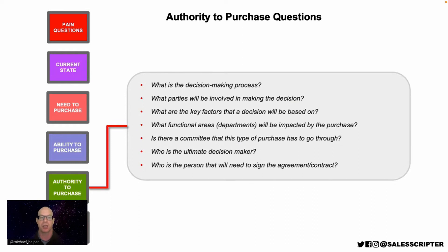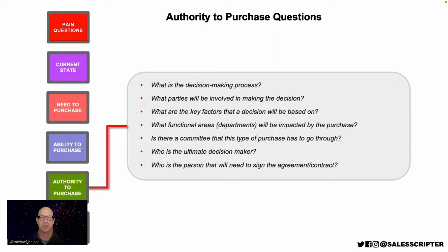One way to get the ultimate decision maker involved without offending the prospect you're working with is to be very direct: 'Our standard process is a very short, brief interview with the CFO to gather some information before we finalize the proposal — what's the best way to get that on the calendar?' That's much better than asking 'Can you get me a meeting with the CFO?' If that person isn't available, work with your coach to ensure the decision maker is aware of what's being discussed so they aren't blindsided by a large proposal at the eleventh hour.